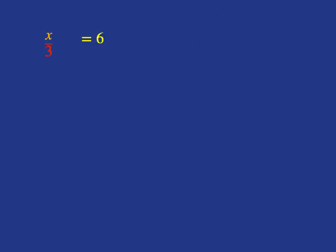A final example. Here we've got x over 3 is equal to 6. Now remember, if we write x over 3, that just means x divided by 3 is equal to 6.